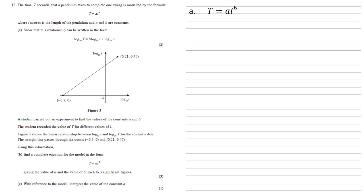So let's start with our formula t equals a l to the b. If we take log base 10 of both sides, we can now use our rules of logarithms on the right hand side, because there we've got two items multiplying together within the log. We've got the a and we've got the l to the power of b.